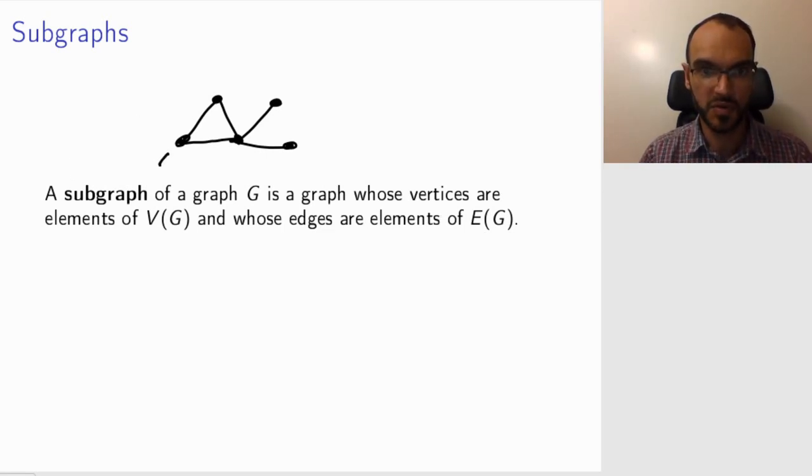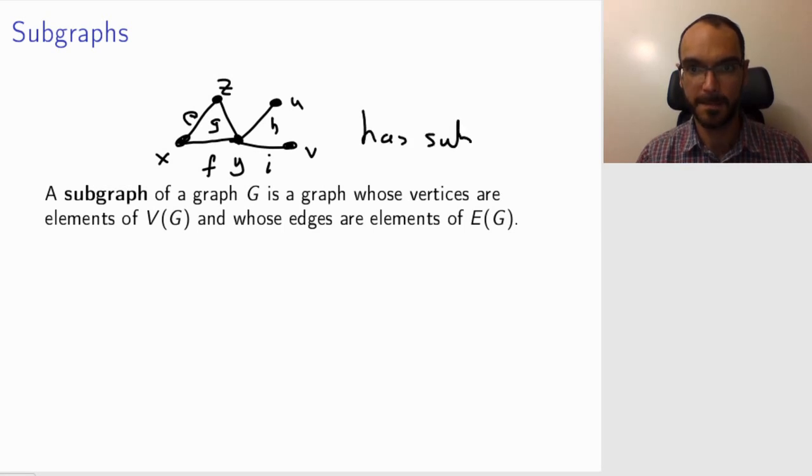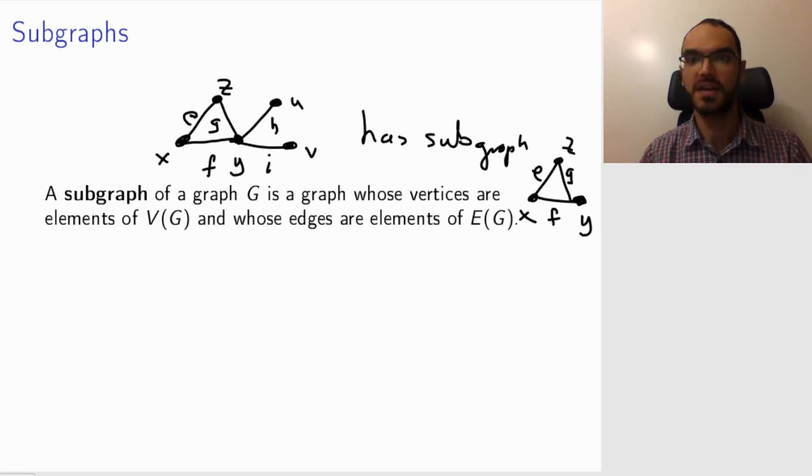So in this graph, let me, to be careful, label all the vertices and also label the edges. So this has a subgraph that is the following, the rectangle with vertices X, Y, Z, and edges E, F, and G. So this is a graph, its vertex set is a subset of the vertex set of my original graph, and so is its edge set.